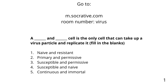Quiz question: a blank and blank cell is the only cell that can take up a virus particle and replicate it. The answer is C — susceptible and permissive. Susceptible means the cell has receptors; permissive means the cell is internally able to replicate the virus. That's an important concept — it really helps you in understanding virology.